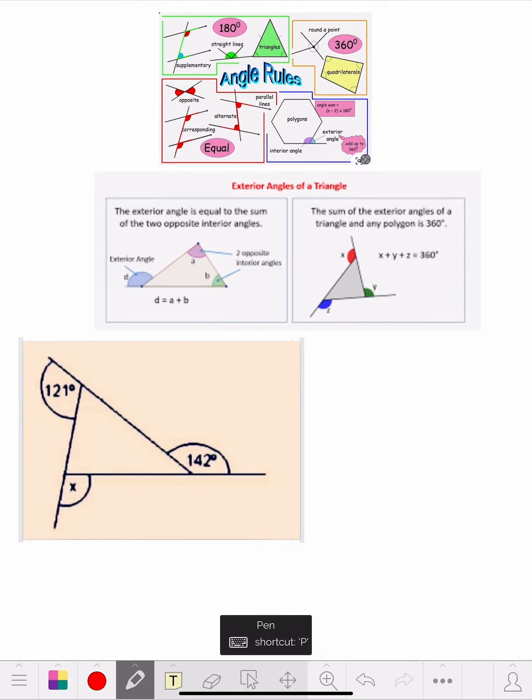Hello class, Mr. Stone here. The problem they gave us today, it's a triangle. They gave us two outside angles and we're missing one outside angle and they're calling that x. They want us to solve the x.